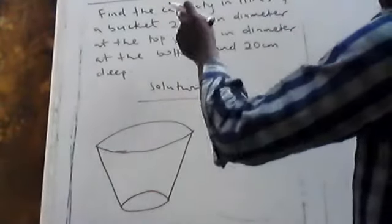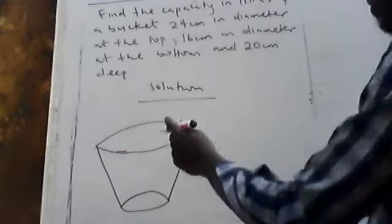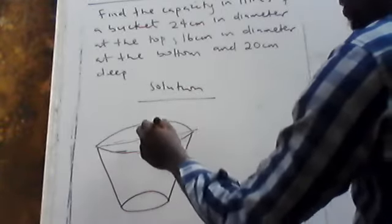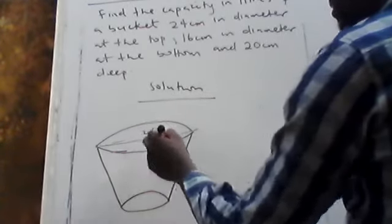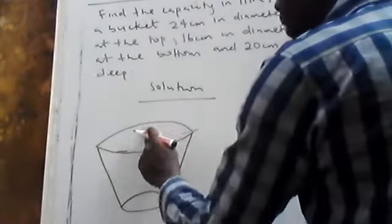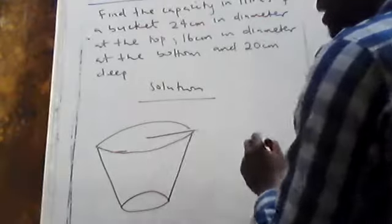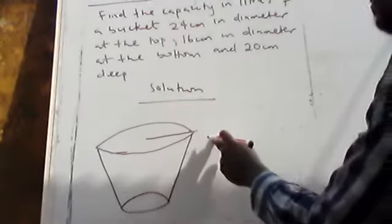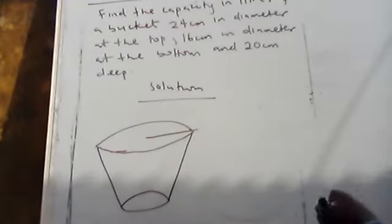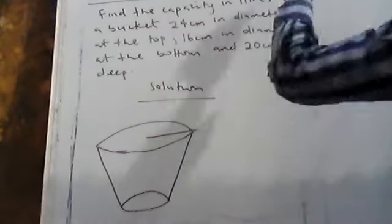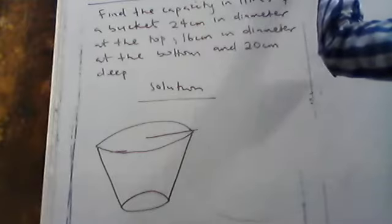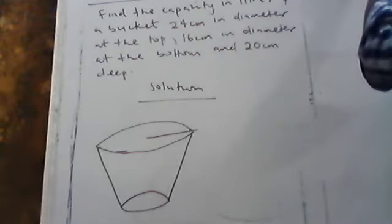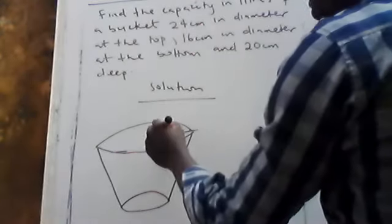I've drawn the bucket on the board. The diameter at the top of the bucket, from here to here, is 24 centimeters. I want to write the radius rather than the diameter. The radius is from the center of the circle to the circumference — that is called the radius.